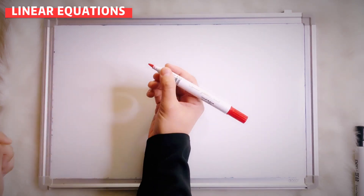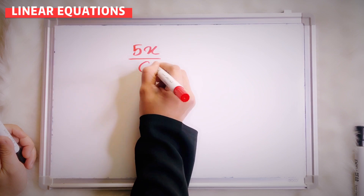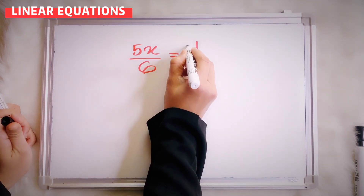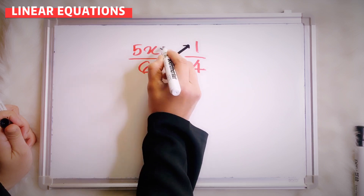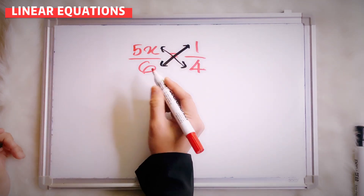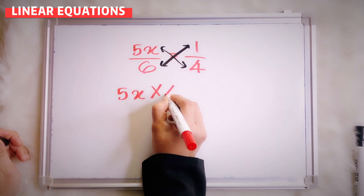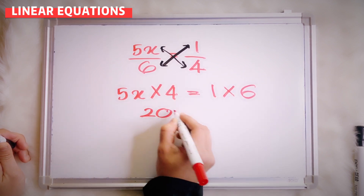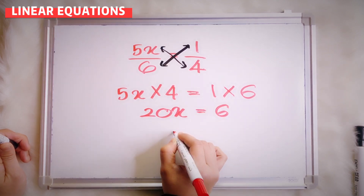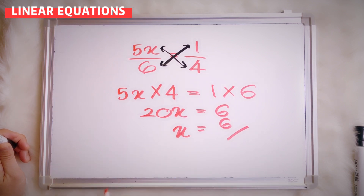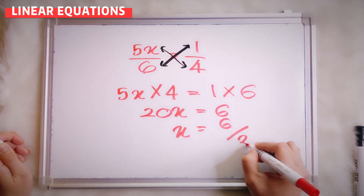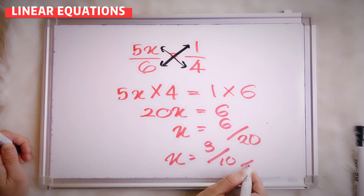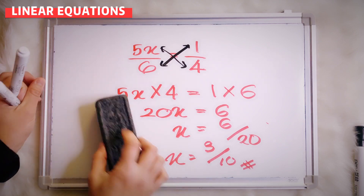How about if I give you 5x over 6 equals 1 over 4? For this question, I prefer to use cross-multiplication. So 5x multiplied by 4 and 1 multiplied by 6. That gives you 20x equals to 6. So your x will be 6 over 20, which simplifies to 3 over 10.